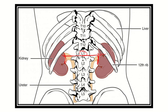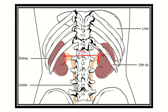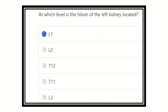The transpyloric plane passes through the hilum of the kidney. From these two pictures, it is clear that at the L1 vertebra level the hilum of both kidneys is located, and this line is known as the transpyloric plane. So our final answer is L1 vertebra, because at the L1 vertebra level the hilum of both the left kidney and right kidney is located. Thank you.